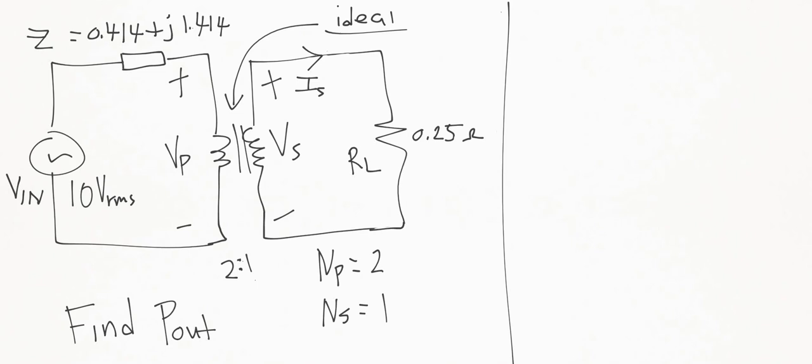In order to solve this one quickly, we have to understand that there is a relationship between this RL and its reflected portion towards the primary side. Put another way, the impedance of the load reflected back through the transformer is equal to the turns ratio squared times the load itself.